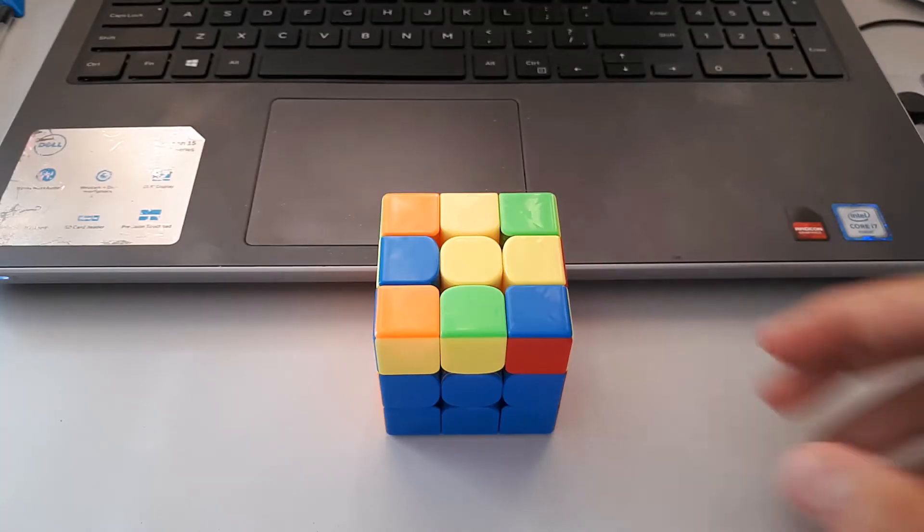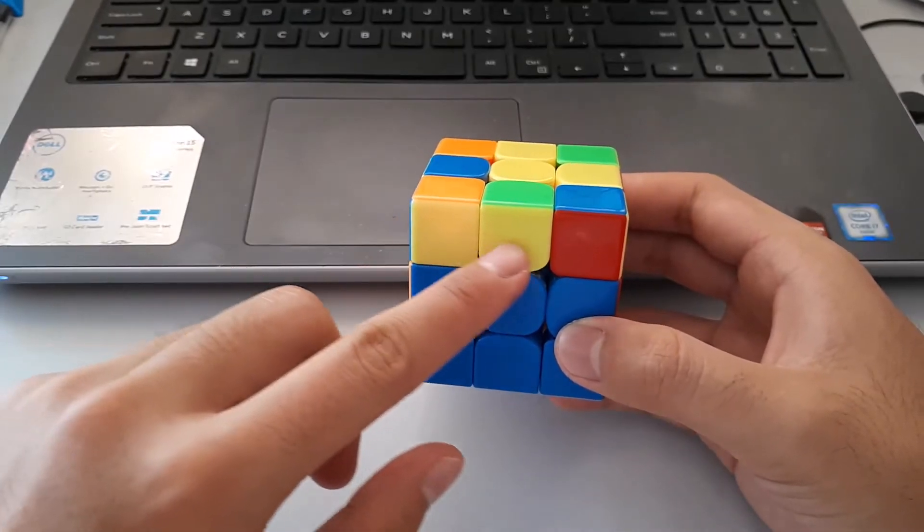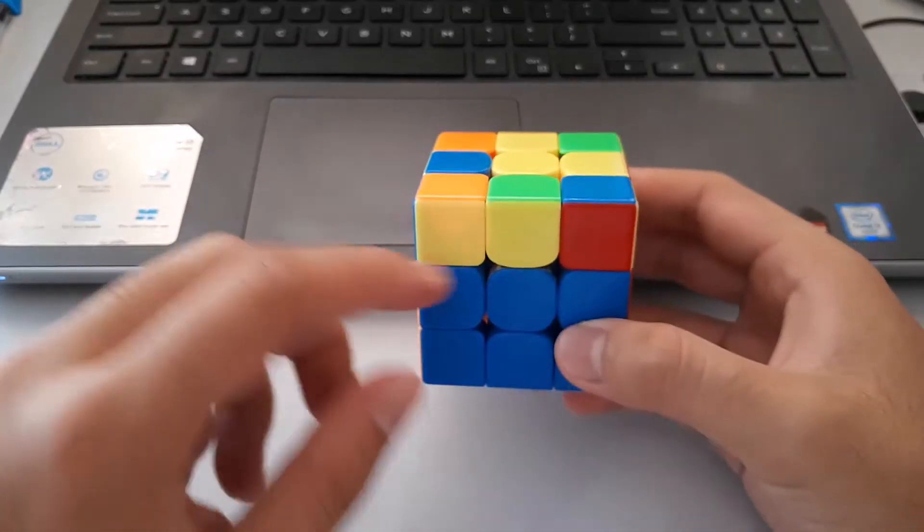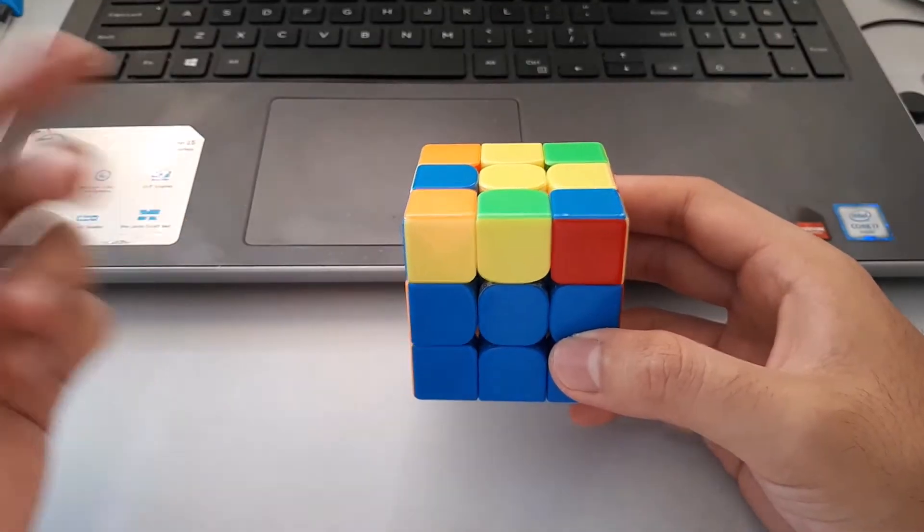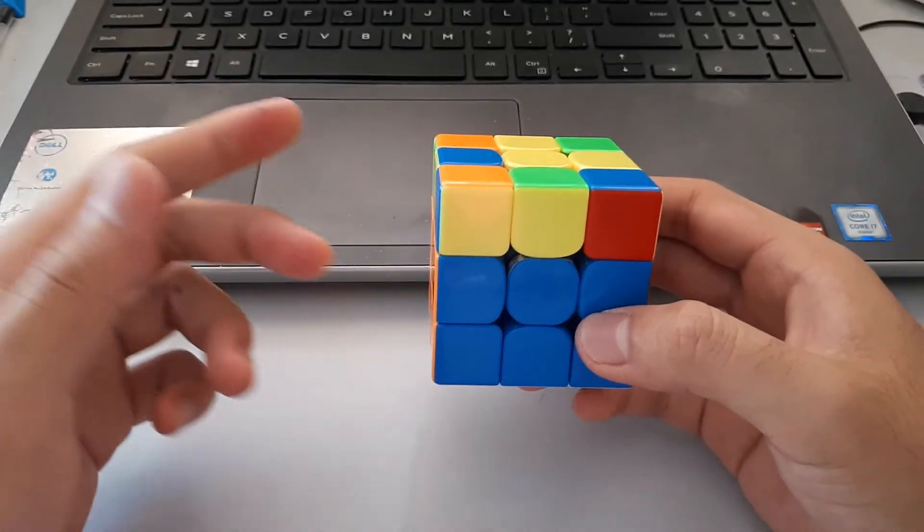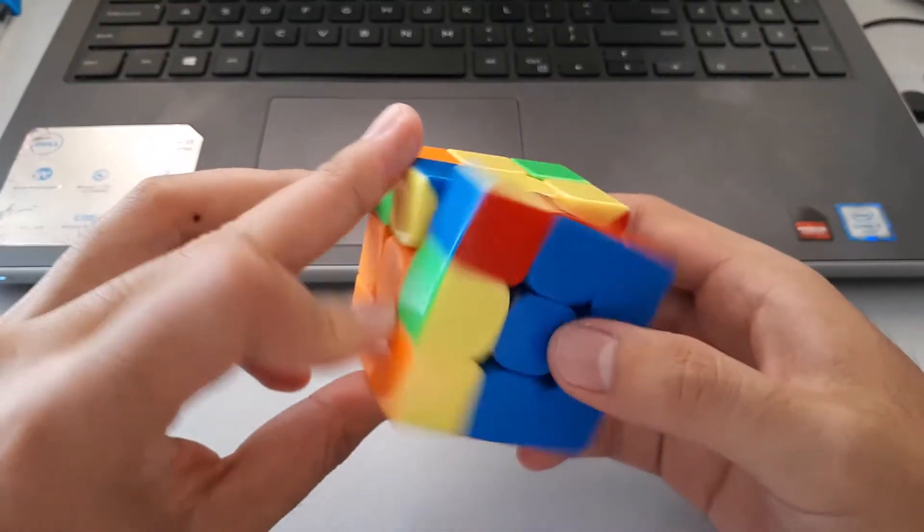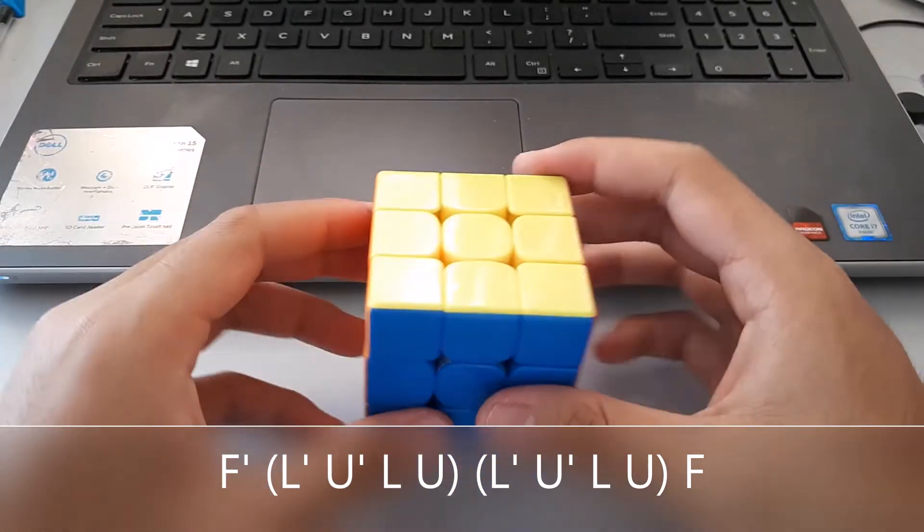So the next case is the mirror of the previous one. Once again, we want to look for bars here. So this 2x1 bar, we want to put it at the front. And after we put it at the front, we notice that it's towards the left of the cube. So we could use this algorithm. It's basically the mirror of the previous algorithm. Starts off with an F prime, and 2 sexies on the left, and then we finish off with an F.